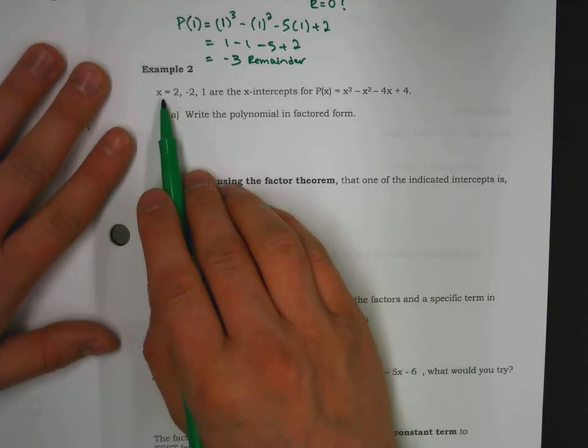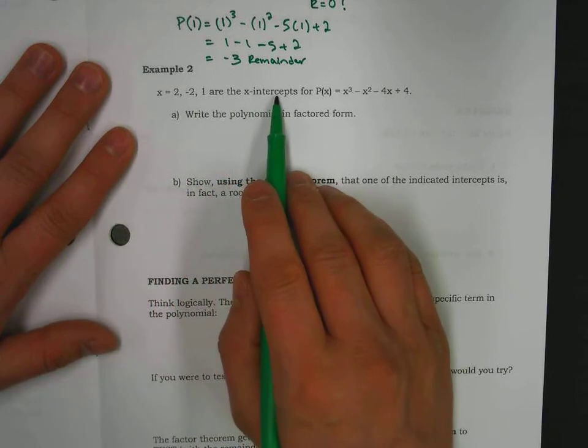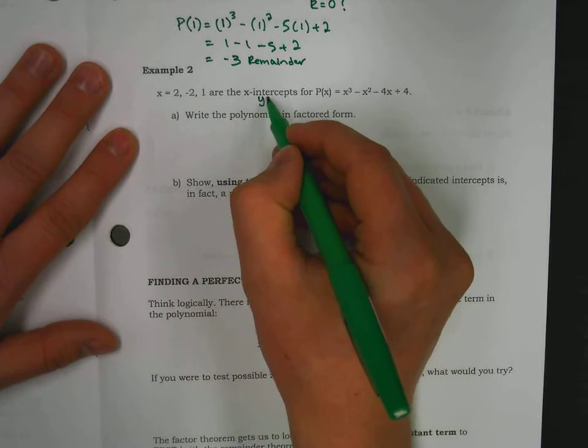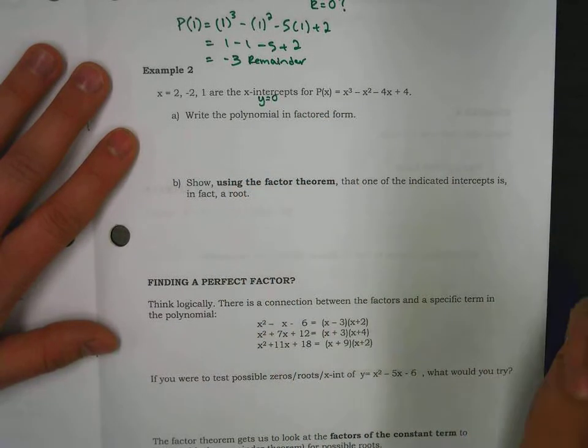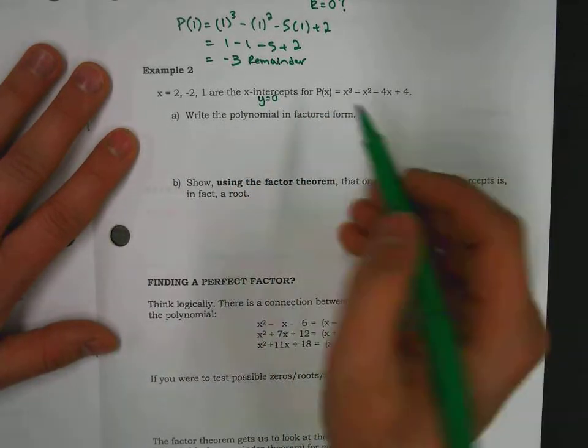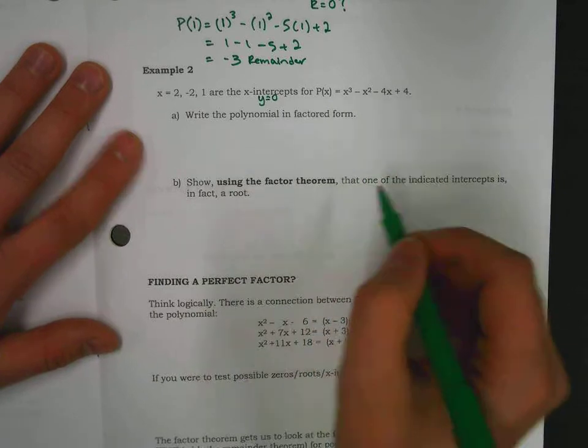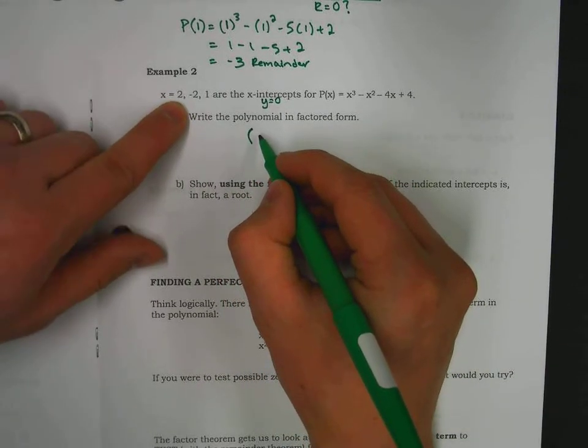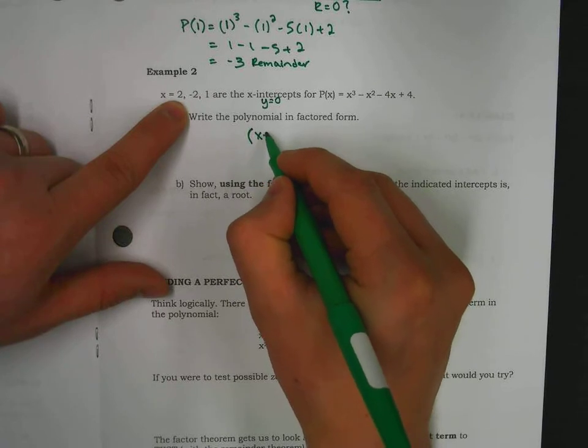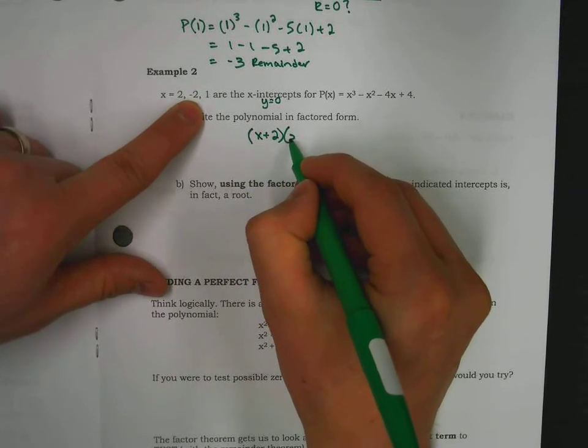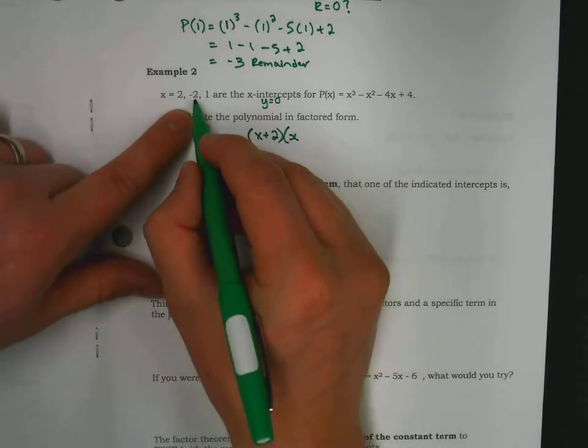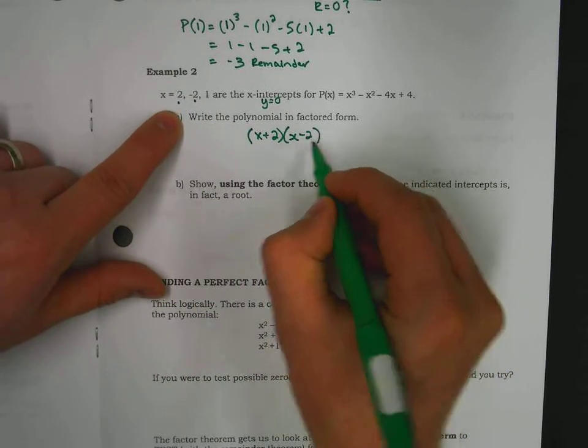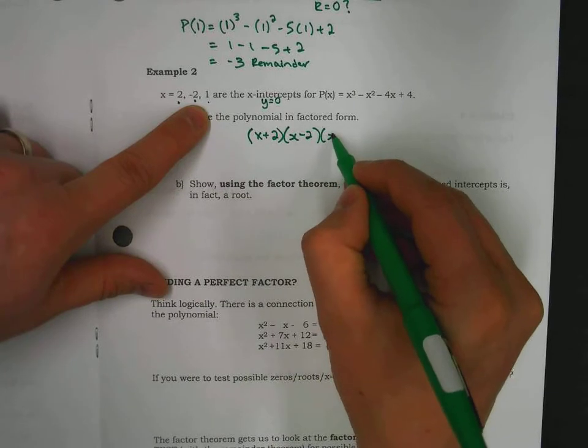If you are told here are three x-intercepts, x-intercepts occur when y is zero, namely when the remainder is zero. So, if you're told these are the x-intercepts for a function, we could say x plus two is a factor, x minus two is a factor, and x minus one is a factor.